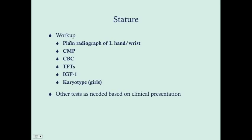To work up short stature, get a plain radiograph of the left hand and wrist to determine bone age. Get a complete metabolic profile including liver function tests, a CBC, and thyroid function tests. Also get an IGF-1 — growth hormone targets the liver causing secretion of insulin-like growth factor 1, so a low IGF-1 suggests a low growth hormone response, which is different from simply having a low growth hormone level.